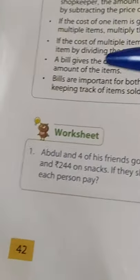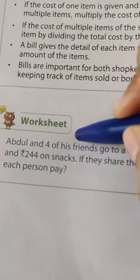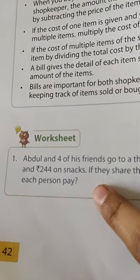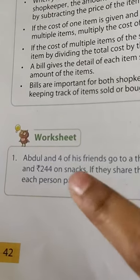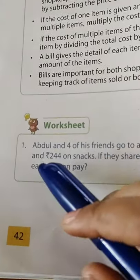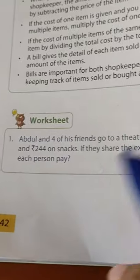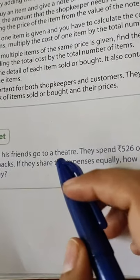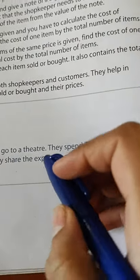Good morning everyone. Today we will be doing worksheet 14 of chapter 9. The first question of the worksheet is: Abdul and four of his friends go to a theater.